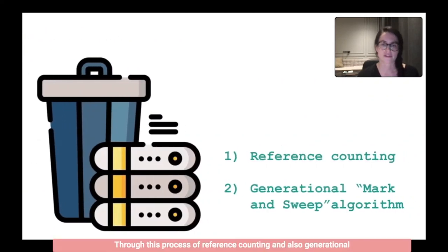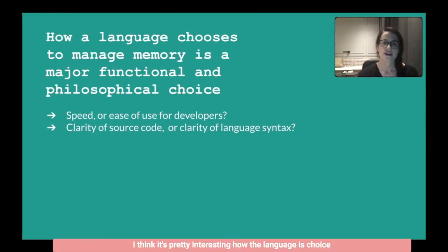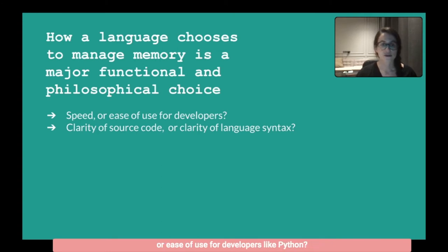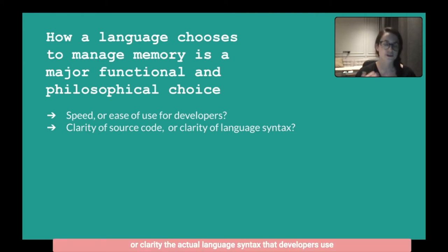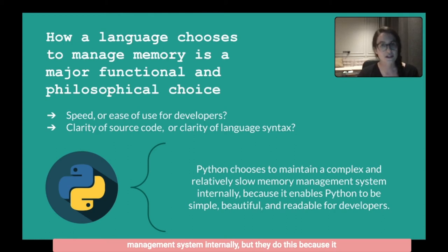Through this process of reference counting and generational mark and sweep, Python takes pretty good care of all memory-related concerns. The language's choice to manage memory is really a major functional and philosophical choice by its developers. Comparing C to Python — are you preferencing speed like C, or ease of use for developers like Python? Are you preferencing clarity of source code like C, or clarity of the actual language syntax developers use every day? Python chooses to maintain a complex and relatively slow memory management system internally, but it does this because it enables Python to be the simple, beautiful, and readable language that it is.